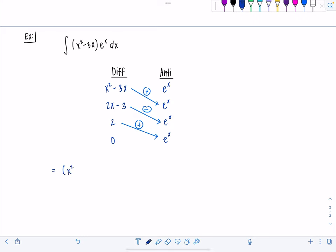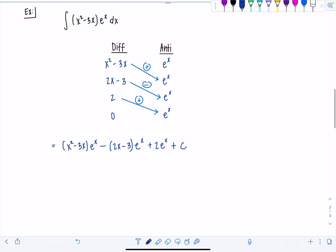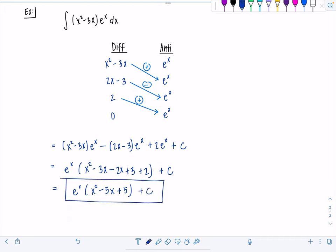So the answer is x squared minus 3x e to the x minus 2x minus 3 e to the x plus 2 e to the x. And then don't forget to put plus c. That's probably one of the most dangerous parts of the problem is you just have to really remember hard to put plus c. And then I'm going to clean this up. I can factor out e to the x. And I'm left with x squared minus 3x minus 2x plus 3 plus 2 plus c. And then this will be e to the x times x squared minus 5x plus 5 plus c. Beautiful. How did you like it?